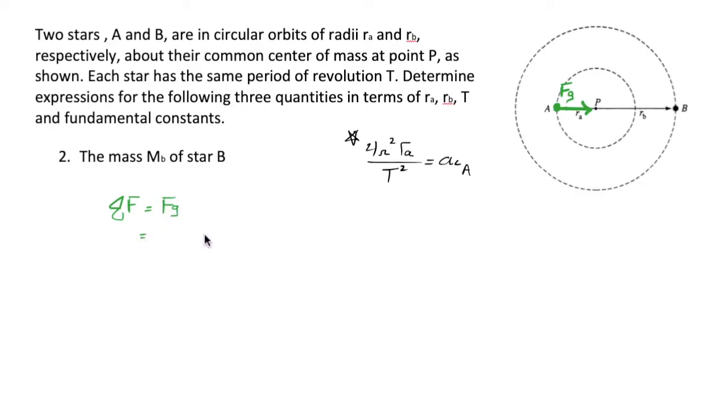The sum of all forces, therefore, is equal to the gravitational force. Now, the gravitational force has a definition. It's G, in this case, MA, MB, over R squared.